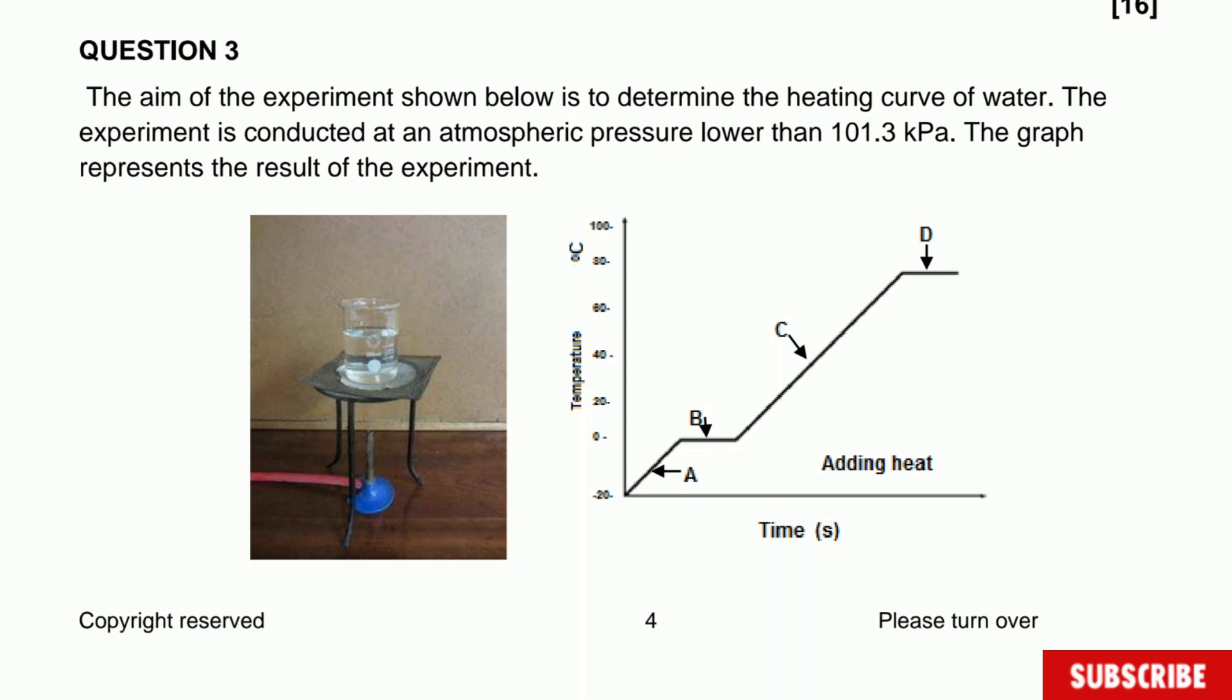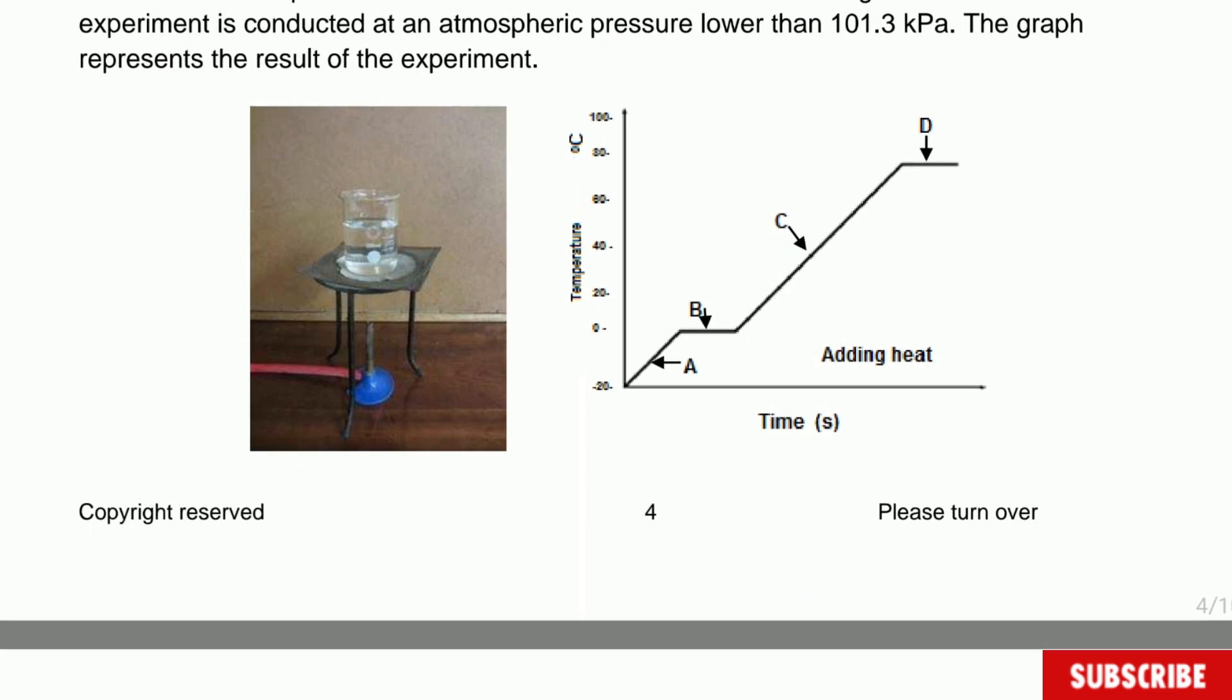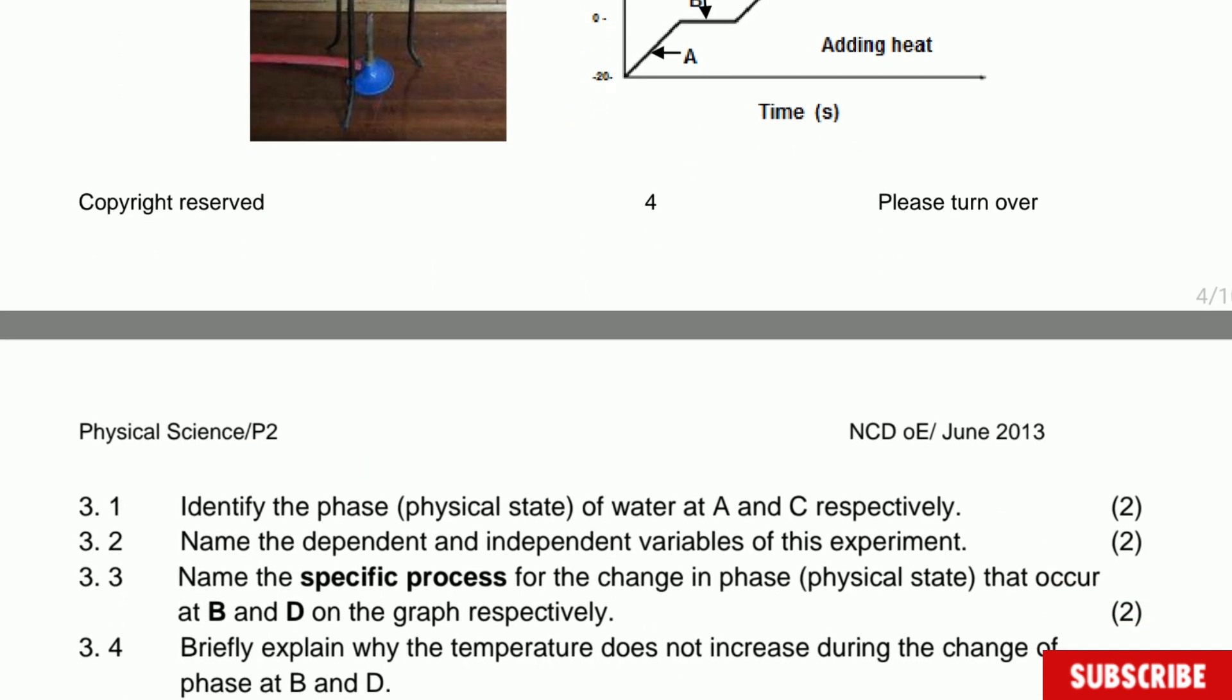This question is going to be about the experiment of heating and cooling curve of water. But before we carry on, subscribe to the channel so you can get all the notifications. The question says the aim of this experiment shown below is to determine the heating curve of water. The experiment is conducted at an atmospheric pressure lower than 101.3 kilopascals. The graph represents the result of the experiment, and there's the picture of what they were doing.